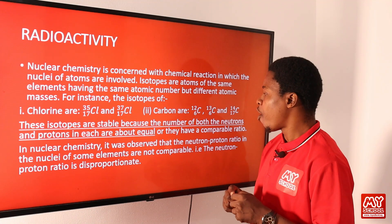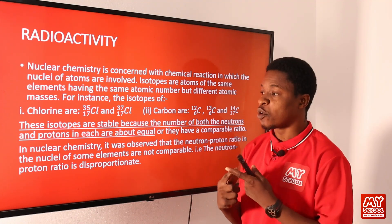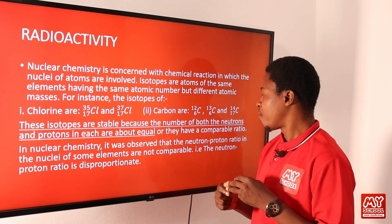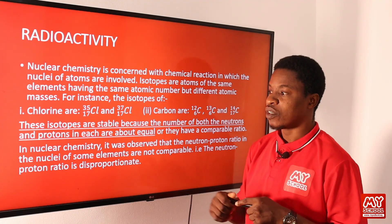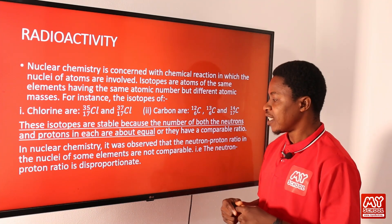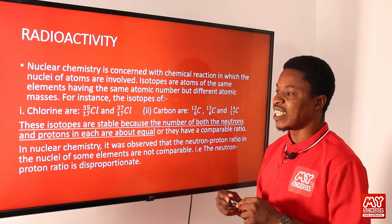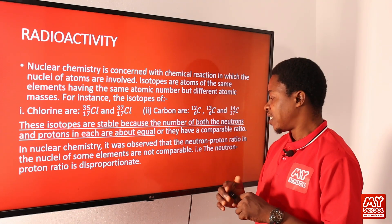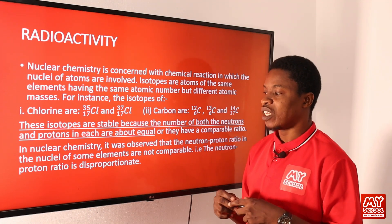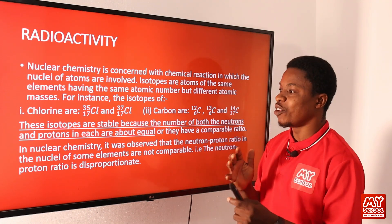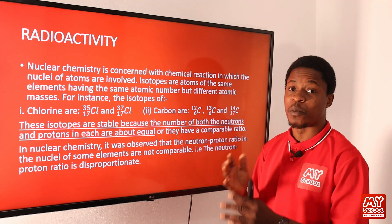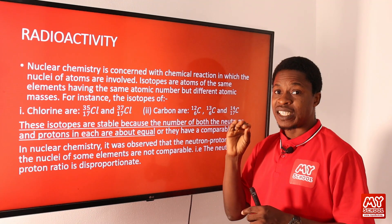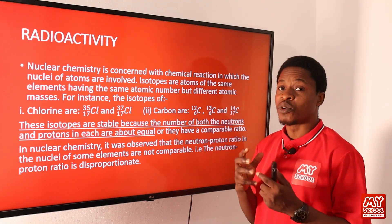Carbon-12 and carbon-13 are stable isotopes because the number of neutrons and protons in each are about equal — they have a comparable ratio. But in nuclear chemistry, it was observed that the neutron-to-proton ratio in the nuclei of some elements is not comparable — the ratio values are not almost the same.